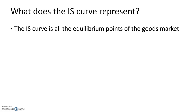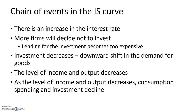The IS curve represents all the equilibrium points of the goods market. The chain of events: an increase in the interest rate means more firms decide not to invest because borrowing becomes too expensive. Investment decreases, causing a downward shift in demand for goods. The level of income and output decreases, and as income and output decrease, consumption, spending, and investment further decline.